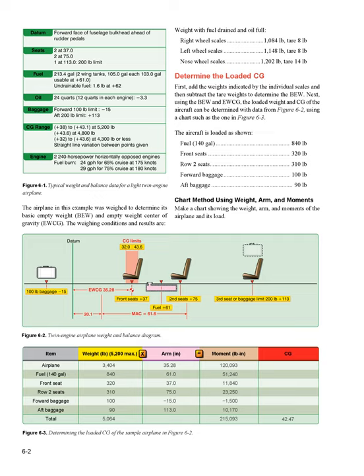The aircraft is loaded as shown: fuel — 140 gallons, 840 pounds; front seats — 320 pounds; row 2 seats — 310 pounds; forward baggage — 100 pounds; aft baggage — 90 pounds. Using the chart method with weight, arm, and moments, make a chart showing the weight, arm, and moments of the airplane and its load.